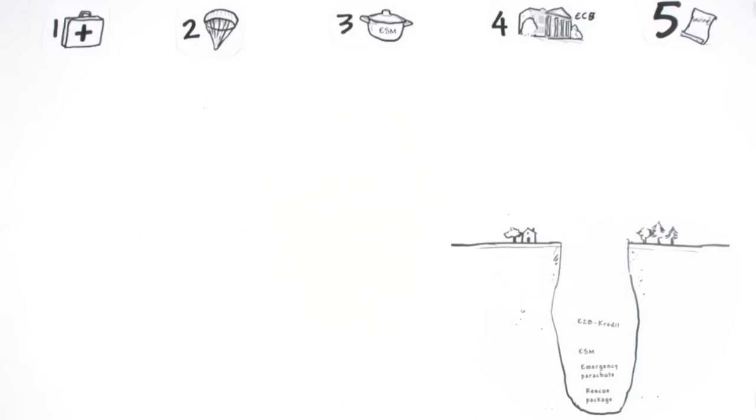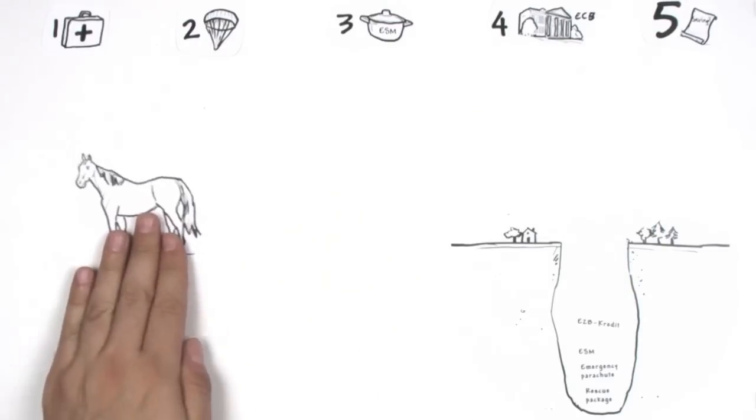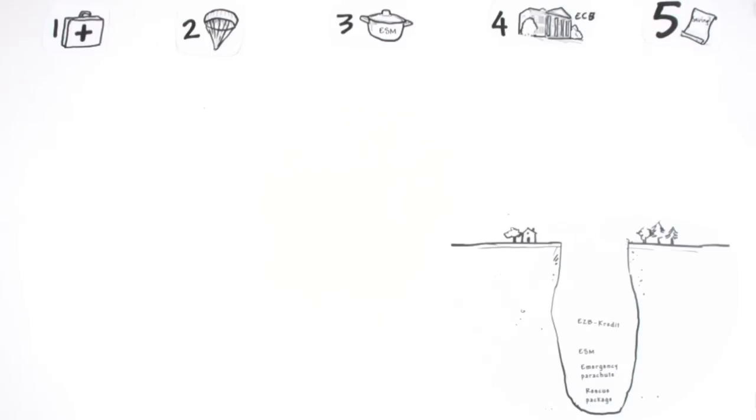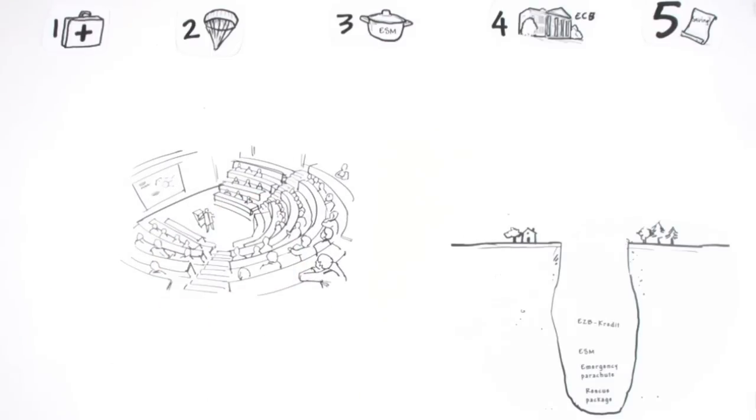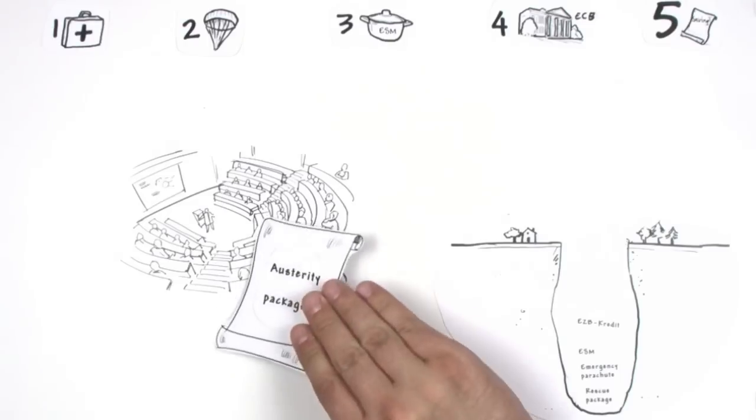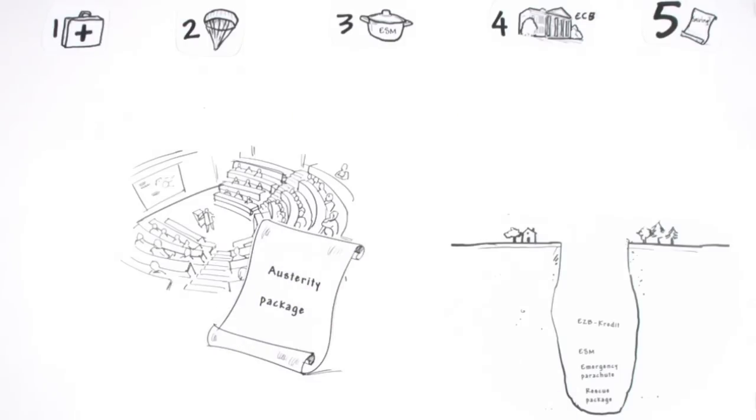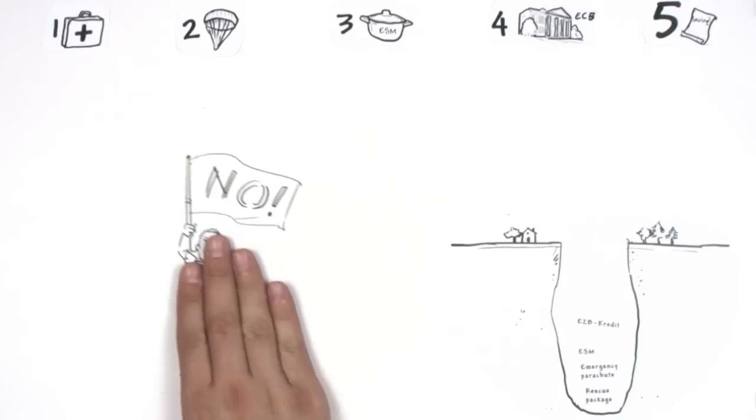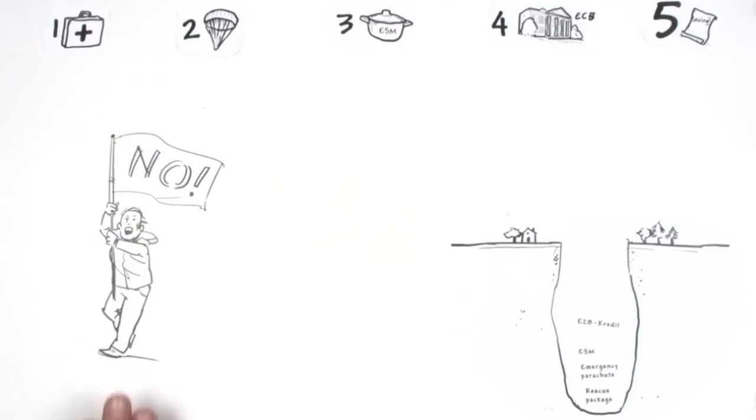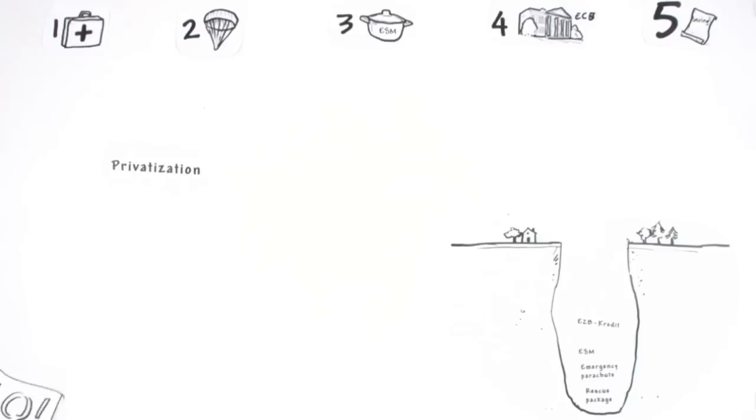Measure number 5 is carried out by the Greek government itself. Life ain't no pony farm, and you have to stand up for your own problems. This is why the Greek government has devised a savings package. But the Greeks are protesting against this package, because they don't see why they should have to pay for the mismanagement of their political class.